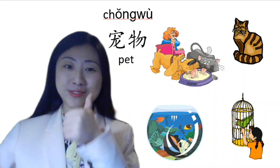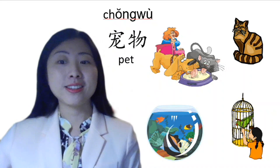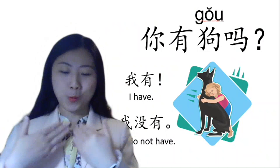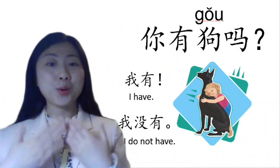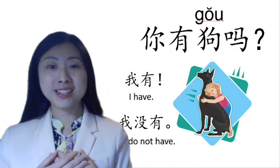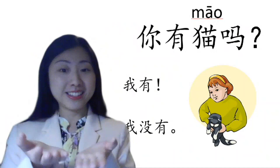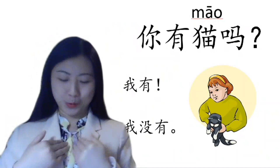非常好 — great. Now, 你有狗吗？— Do you have a dog? 我有 — I have. 我没有 — I don't have. 你有狗吗？我有，我没有. 你有猫吗？— Do you have a cat? 我有，我没有.